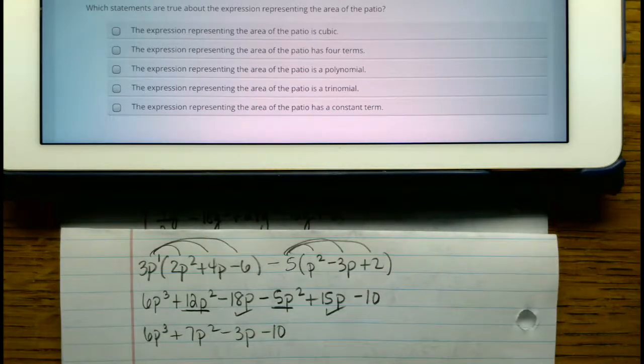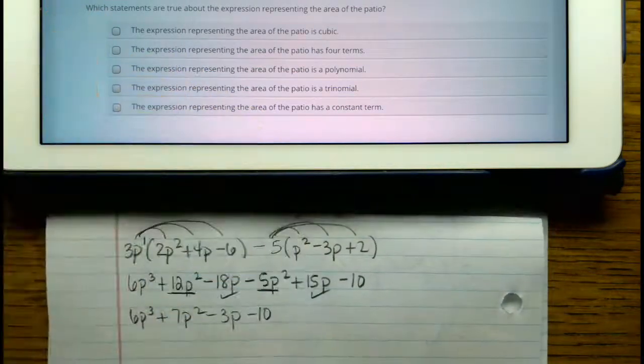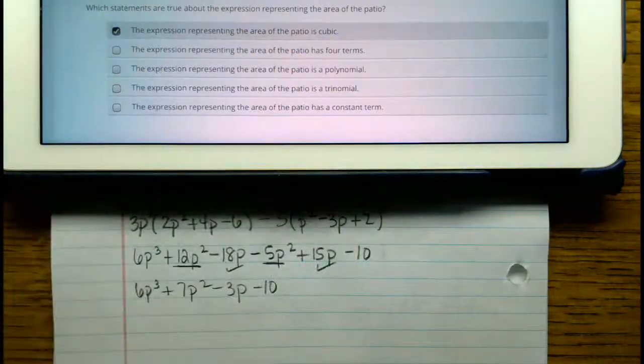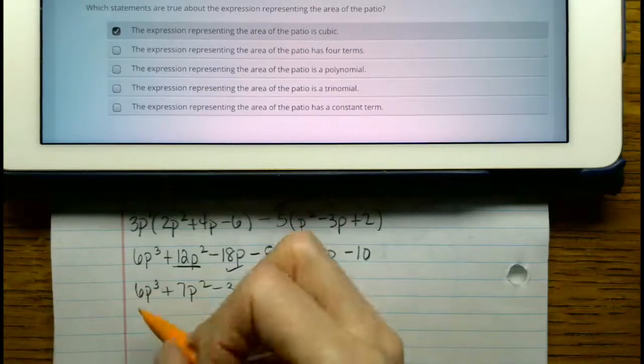So there are our answers here, and if we look back up there at the iPad, I think we can see them all. The expression representing the area of the patio is cubic. Well, our highest degree term is to the third power, so yes, that is true. The expression representing the area of the patio has four terms.